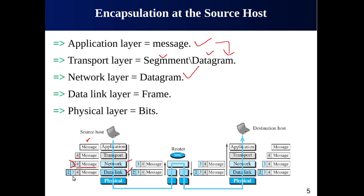The data link layer receives the datagram from the network layer as its payload and adds its own header, which contains the link layer addresses of the host or the next hop such as a router. The result is a link layer packet known as a frame. The frame is then passed to the physical layer for transmission as bits in the form of signals. This entire process at the source node is known as encapsulation.